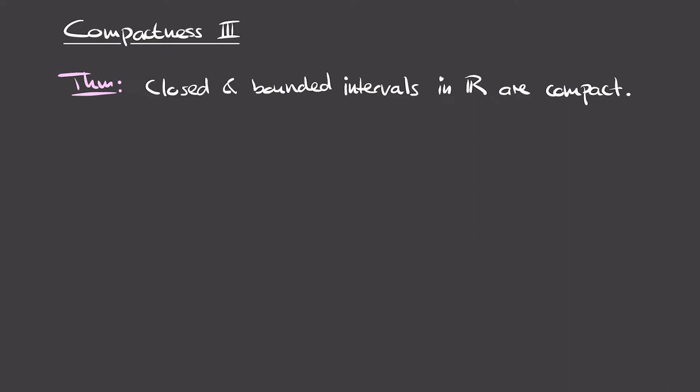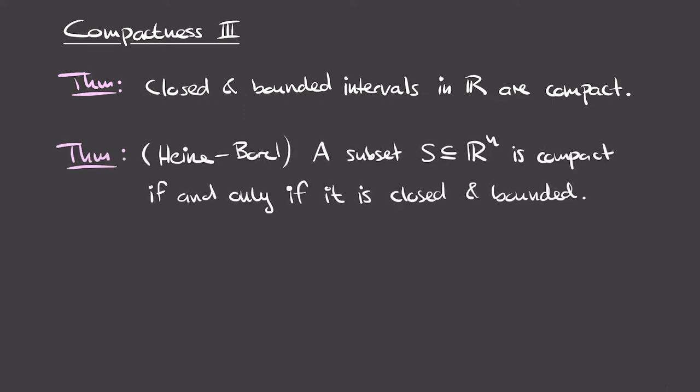One of the basic types of spaces we'll be able to prove compact are closed and bounded intervals of the real line, though we'll see this requires some effort. The second theorem is the Heine-Borel theorem, which characterizes the compact subsets of Euclidean space R^n. It says that a subset of R^n is compact if and only if it is closed and bounded. We'll see that the proof of Heine-Borel requires the previous theorem about closed and bounded intervals in R.